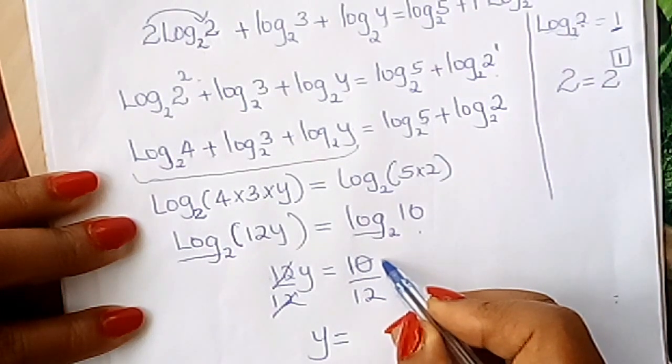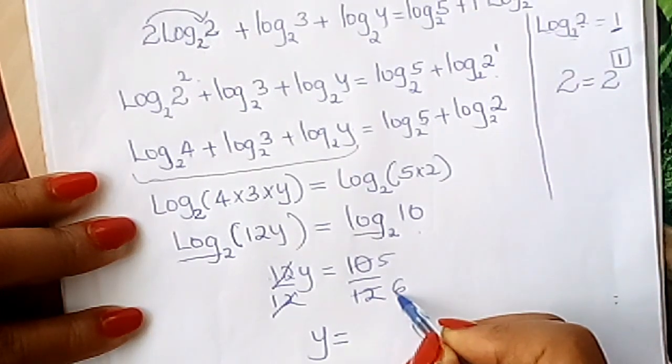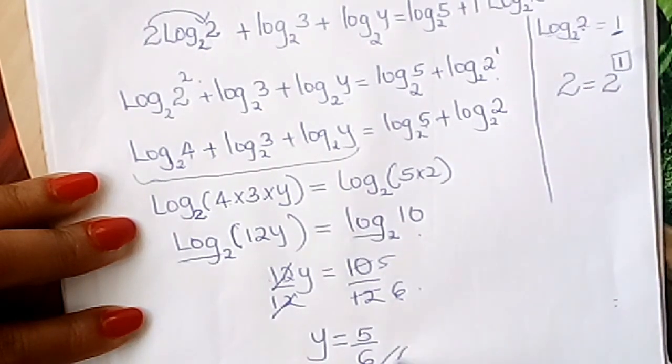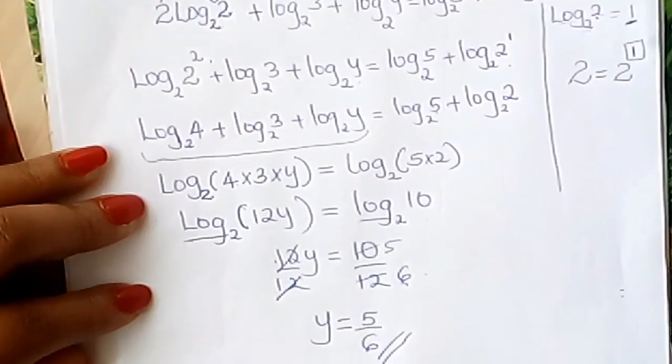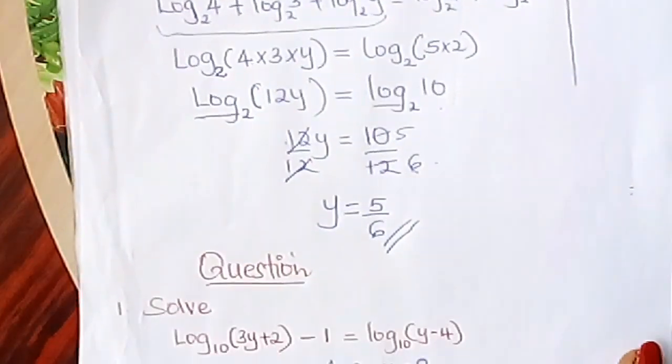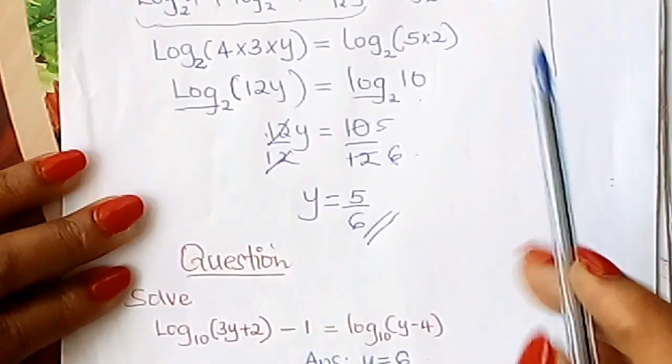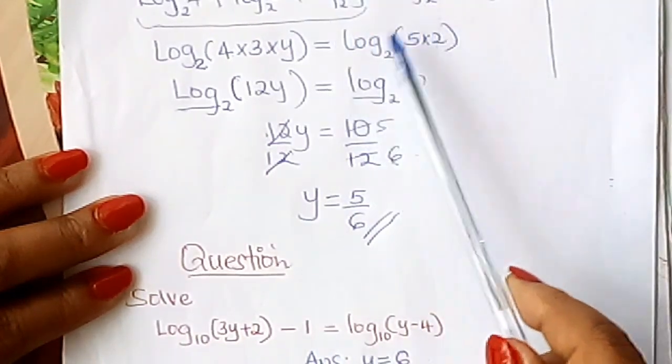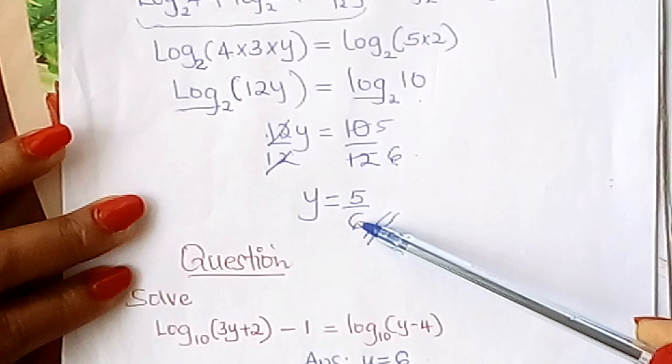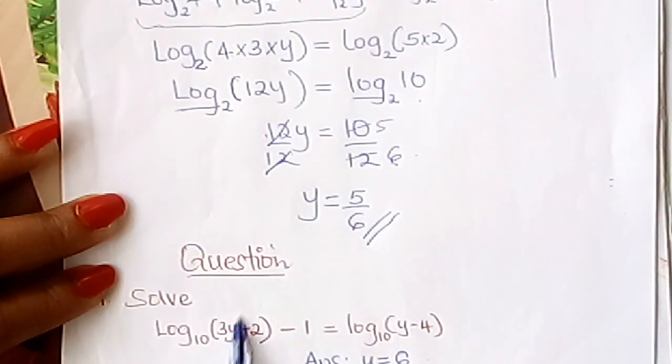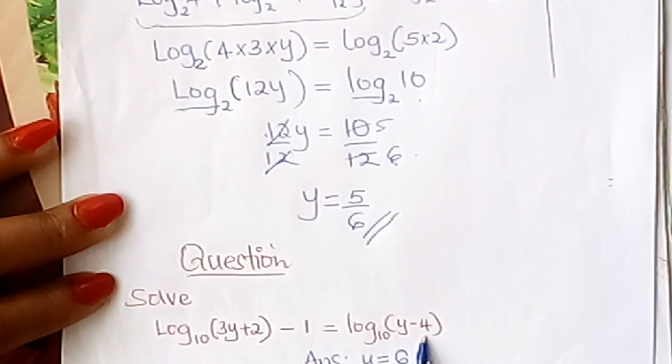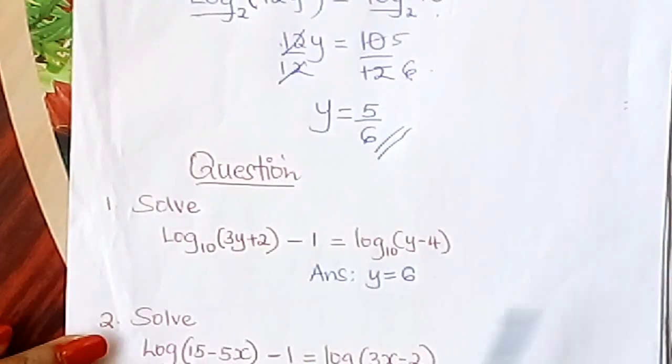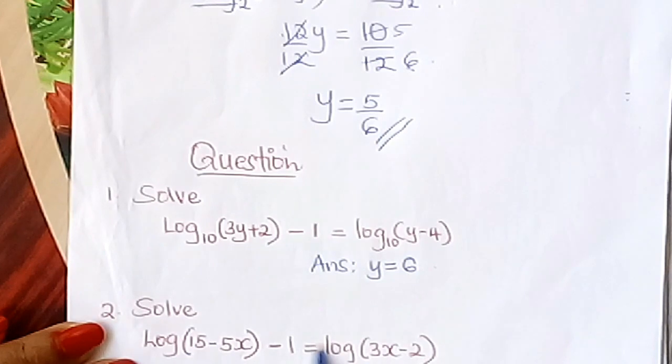y equals what? Simplify this by 2: 5, 6. So your y is 5 over 6. I hope you got the point there. So, go through this example slowly as you internalize. Then come and try out these equations, these logarithmic equations.